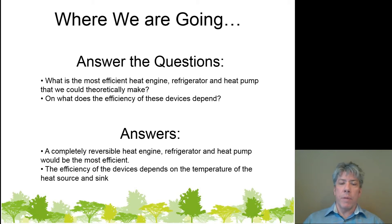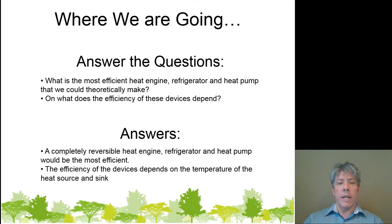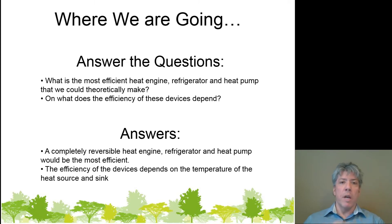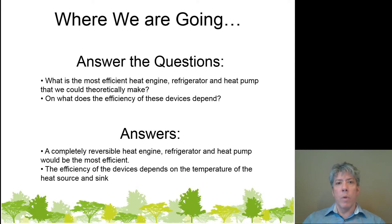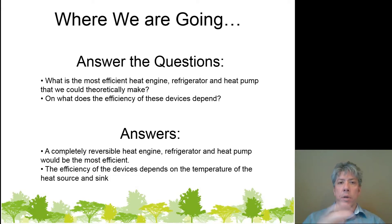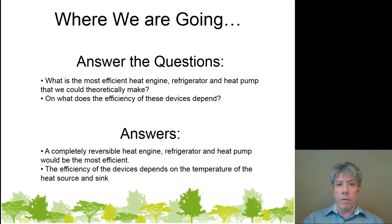The answer: a completely reversible heat engine, refrigerator, or heat pump — whichever device you want to talk about — that's the one that would be most efficient. The efficiency of any of those devices depends on the two temperatures they're working across. An engine takes in fuel and burns it to generate thermal energy; whatever that maximum temperature is versus the temperature of the atmosphere, those are the temperature limits it's working between. Similarly, refrigerators and heat pumps work between two temperatures — the internal temperature of the refrigerator versus the outside temperature.